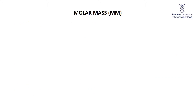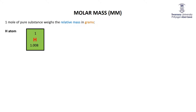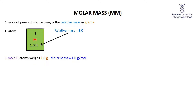This brings us to an extremely important extension: the molar mass — the mass of a mole, not the mass of a tooth. One mole of any pure substance weighs the relative mass in grams. It's a slightly awkward definition but very easy to apply. Take hydrogen: on the periodic table its relative mass is 1.008 — let's call it 1.0. That tells us that one mole of hydrogen atoms weighs 1.0 grams.